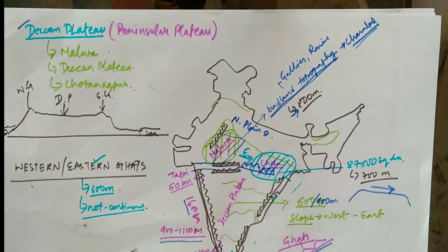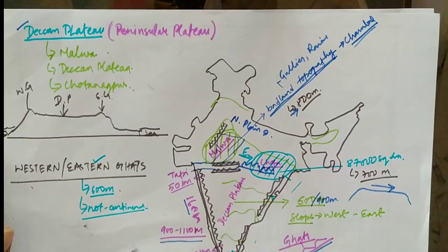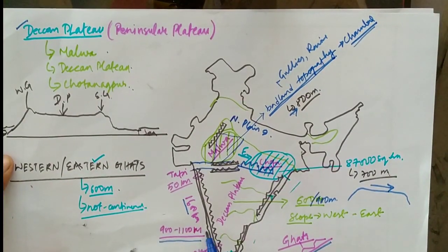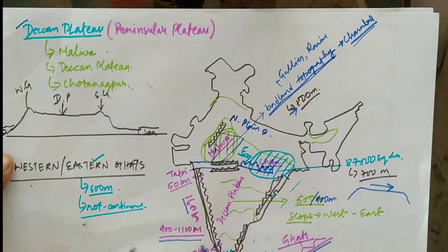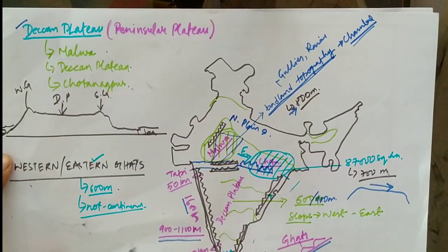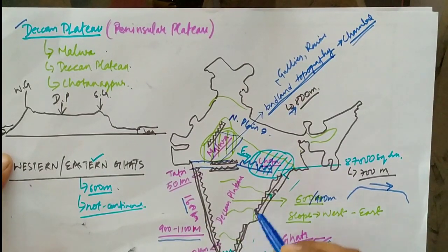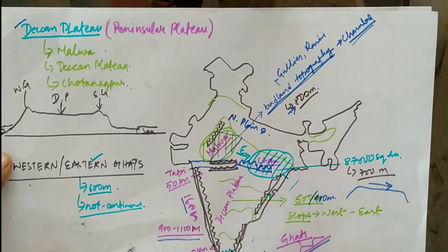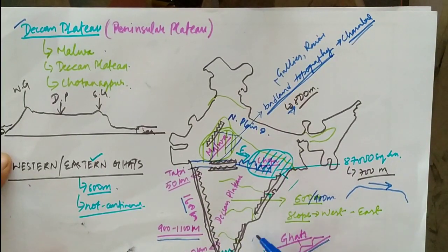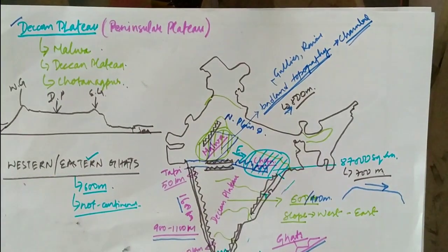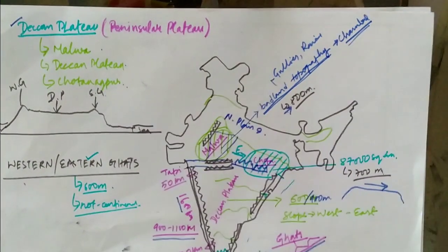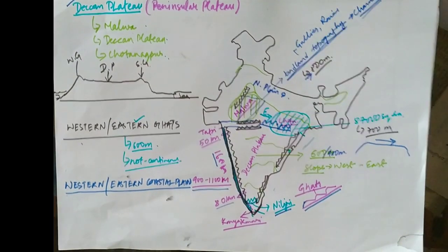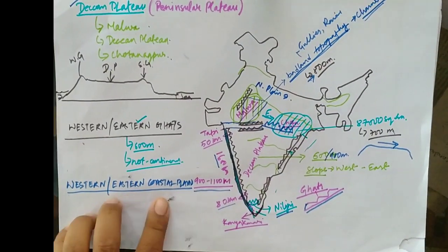The eastern coastal plain is broken into many parts because of the presence of river deltas, which is why the Eastern Ghats are not a continuous chain of mountains. The Western Ghats help in trapping the monsoonal winds, resulting in more rainfall. However, the monsoonal winds blow parallel to the eastern coastal plain, so less rainfall is caused there.